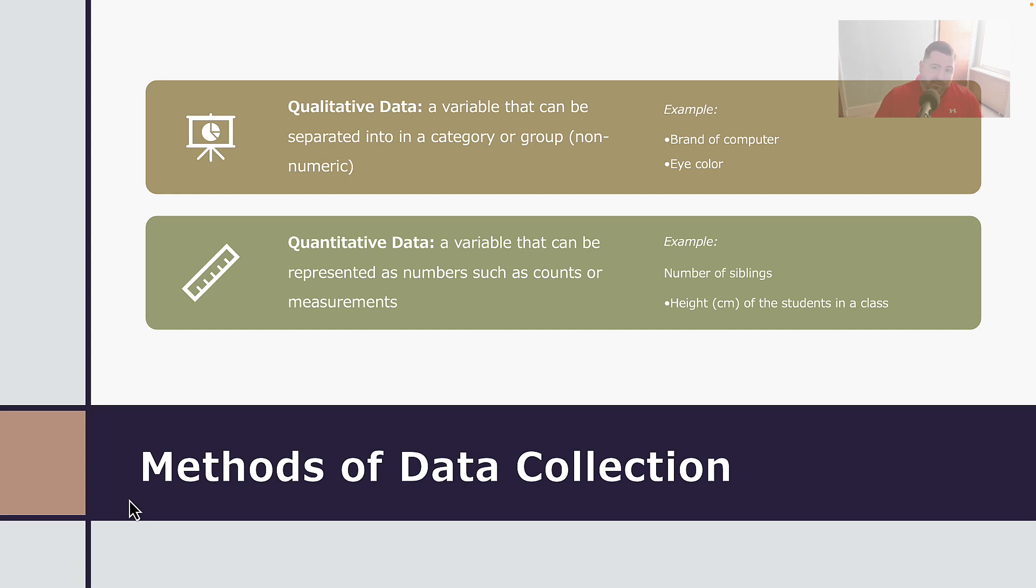Qualitative data, on the other hand, is data that is not number based. This is data that is categorically grouped on the basis of language or words that are collected.